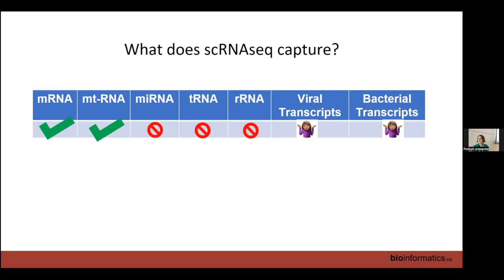Long non-coding RNAs with poly-A tails can be captured. Those without poly-A tails cannot — except for Malat1, which you'll see everywhere in every dataset. Everyone who has done single cell analysis has encountered Malat1 — it drives everyone crazy.